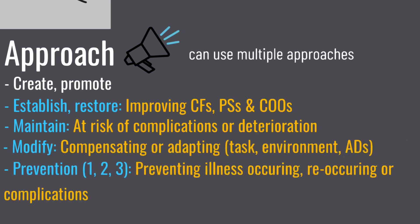Primary prevention is when you prevent an illness occurring in a healthy population. Secondary prevention is preventing a reoccurrence of a disease — for example, a client who has had a stroke, preventing a second stroke. Tertiary prevention is when we're preventing complications from arising — for example, pressure sores in a client with a spinal cord injury.